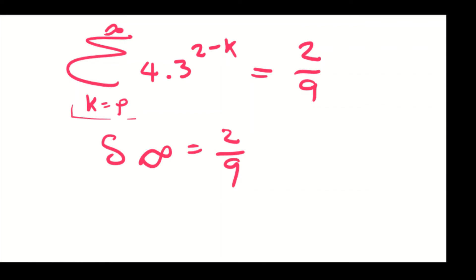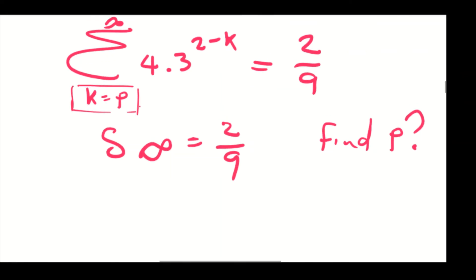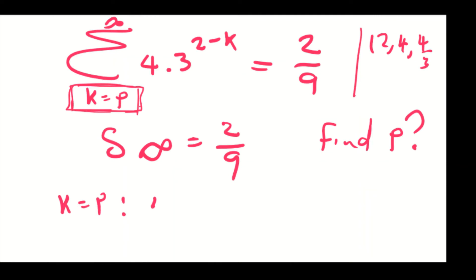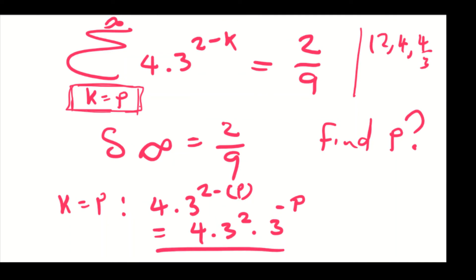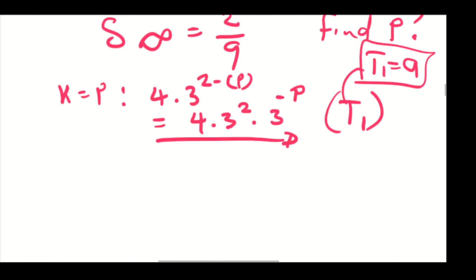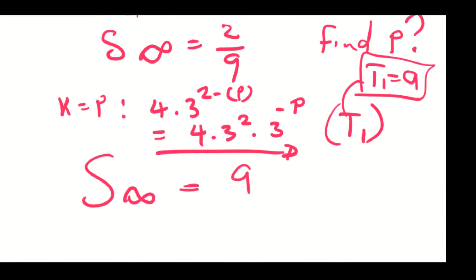We are asked to find p. Since the series starts at k equals p, we substitute k equals p into the expression: 4 multiplied by 3 to the power of 2 minus p. This simplifies to 4 multiplied by 3 squared multiplied by 3 to the power of minus p. This becomes our first term a. We then write the sum to infinity formula: S∞ equals a over 1 minus r.